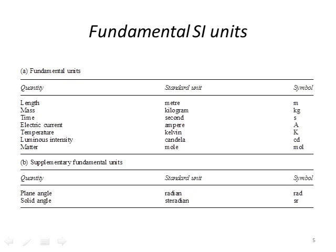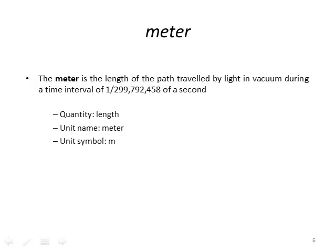You will be required to remember each one of these quantities and the unit associated with it. The meter is the length of the path traveled by light in vacuum during an interval of 1 over the speed of light — which defines the second. The quantity is length, the unit name is meter, and then the associated symbol as discussed.